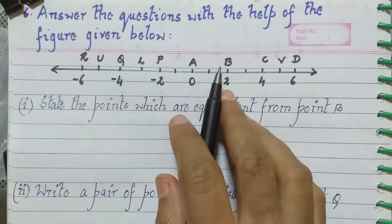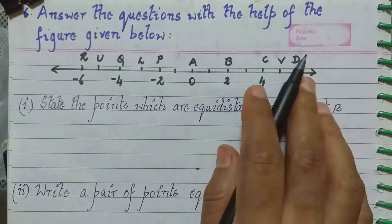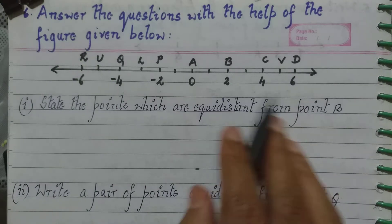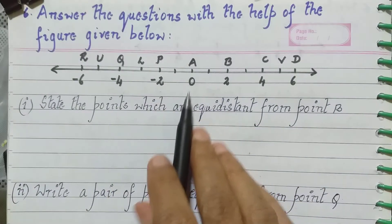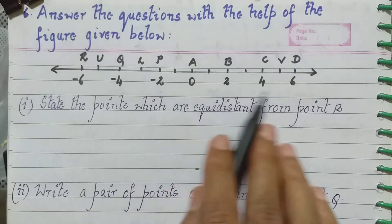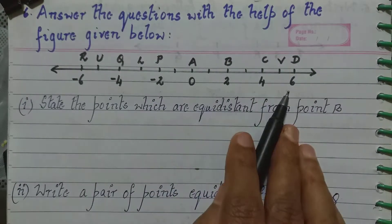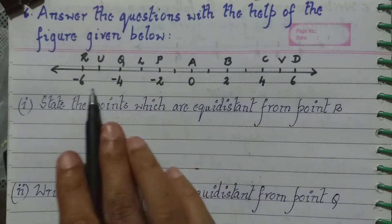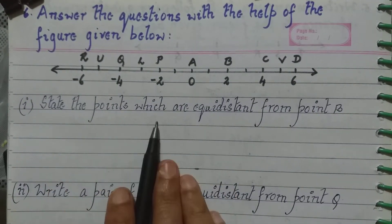Sixth question: answer the questions with the help of the figure given below. Here you see a number line is given, we have 0 at the centre, positive numbers on the right hand side and negative numbers on the left hand side.